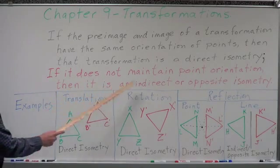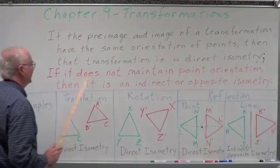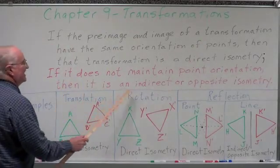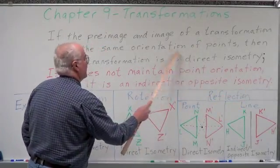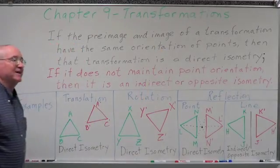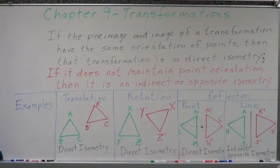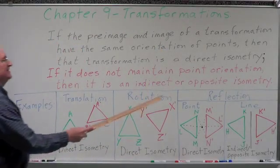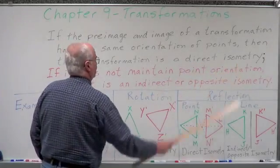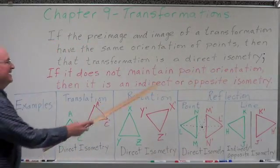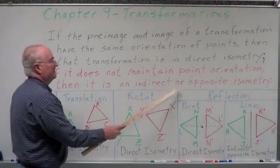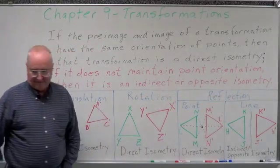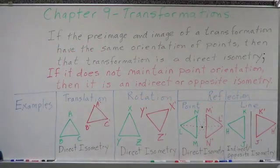If a transformation does not maintain point orientation, then it is an indirect or opposite isometry. If it maintains point orientation as well as those four properties, it's a direct isometry. If it does not maintain point orientation, it is an indirect or opposite isometry. Let's look at some examples.